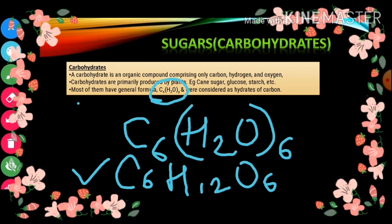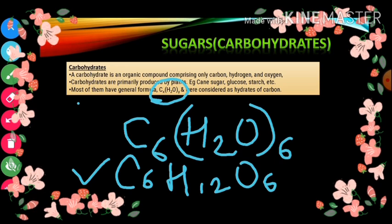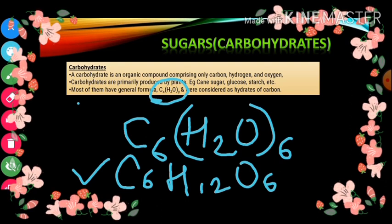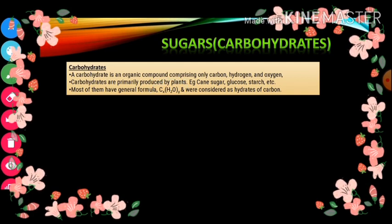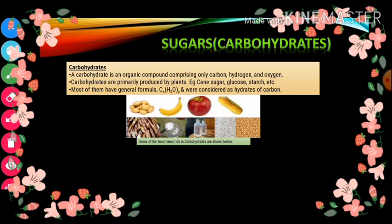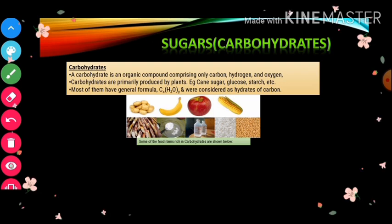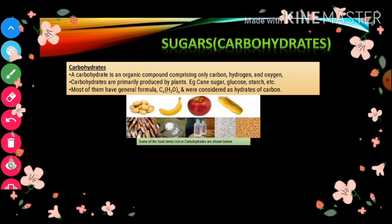So the general formula of carbohydrates is CX(H2O)Y, and carbohydrates are considered as hydrates of carbon. Some food items which are very rich in carbohydrates include potato, banana, corn, apple, wheat, rice, cornflour, and glucose.